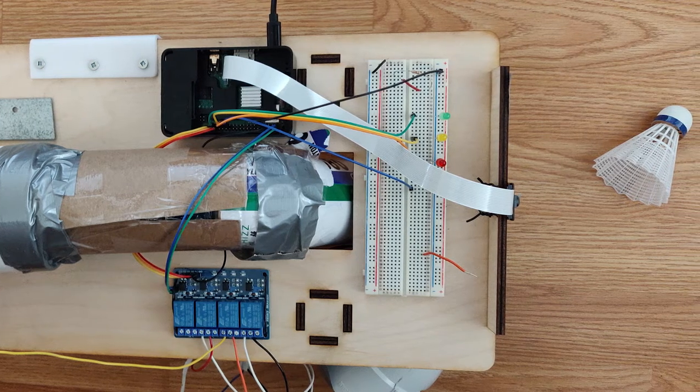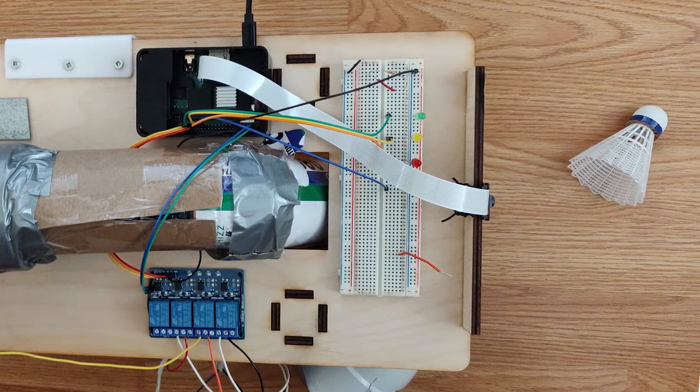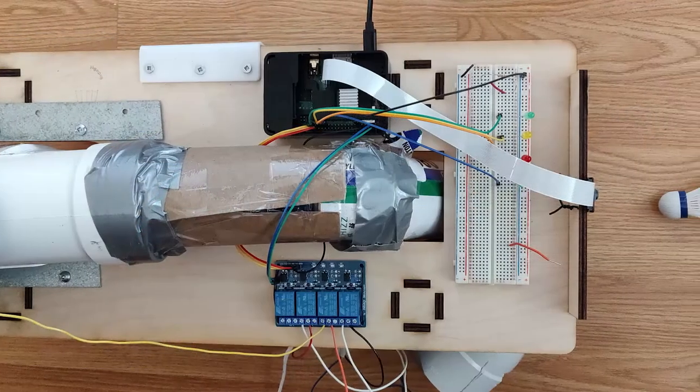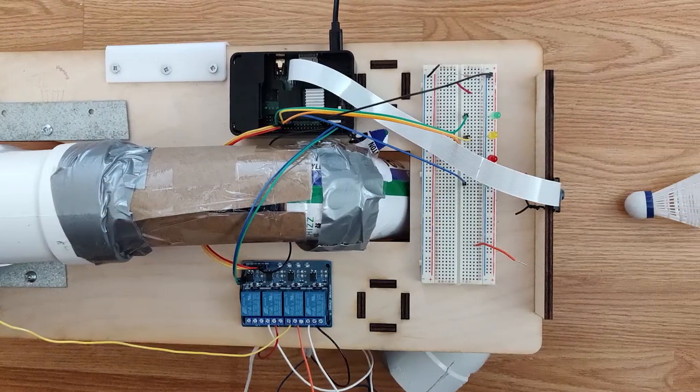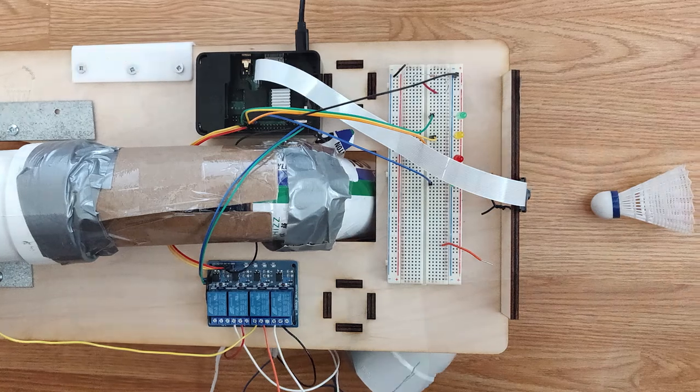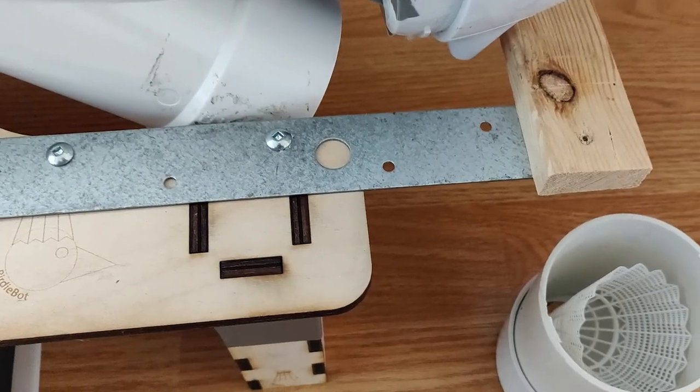If it is not oriented correctly, a fan will adjust the shuttlecock. Once it is isolated in the correct orientation, BirdieBot will retrieve the shuttlecock using a vacuum system and store it for the user to collect.